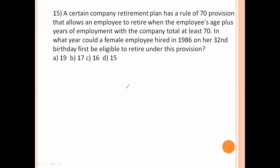A certain company retirement plan has a rule of 70 provision that allows an employee to retire when an employee's age plus years of employment with the company total at least 70. In what year would a female employee hired in 1986 on her 32nd birthday first be eligible to retire under this provision? Here, 32 years plus X years for retirement plus X years to work here equal to 70. 32 plus 2x equal to 70. 2x equal to 38. So, 19 years. 19 years total is equal to 70. Option number A is the right answer.